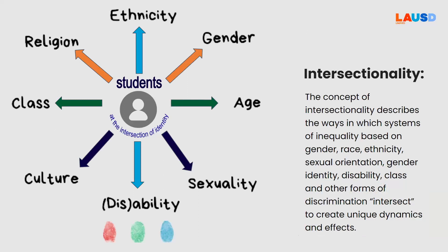Let's look at the concept of intersectionality. Intersectionality describes the way in which systems of inequality based on gender, race, ethnicity, sexual orientation, disability, class, and other forms of discrimination intersect to create unique dynamics and effects. Because of individuals' uniqueness, our students cannot be summed up in one word. They are all not just the gifted student or the student with an IEP or the English language learner. Students have many identities that carry many abilities, capacities, and skills. This is what makes it important to make sure that their uniqueness shines.